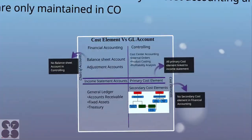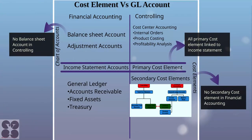If you see the chart of accounts on the left, it consists of balance sheet accounts, adjustment accounts, and income sheet accounts that include revenue and expenses — used for accounts receivable, fixed assets, treasury, etc. On the right-hand side we see Controlling — like internal orders, product costing, profitability analysis, and cost center accounting — with primary and secondary cost elements. There are no balance sheet accounts in Controlling; balance sheet accounts are only for financial accounting and reporting to authorities like the stock market and shareholders.